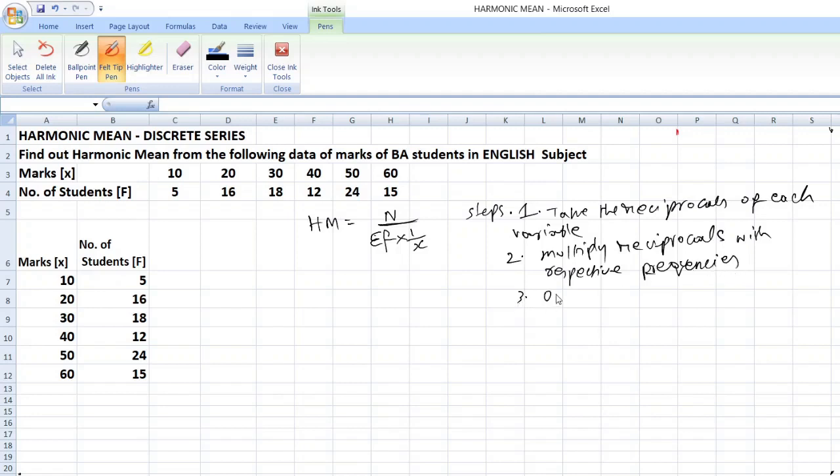Next, obtain the total. Obtain the total and denote it as summation f into 1 by x. So, this one you can keep in the brackets also. Okay. Like this.